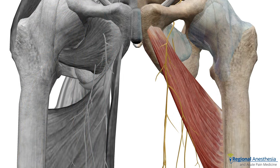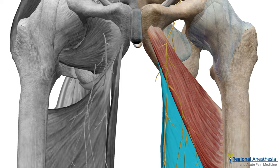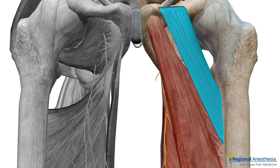The adductor brevis muscle acts as a splitter. The anterior branch of the obturator travels anteriorly to it, and the posterior branch goes posteriorly. Deep to brevis is the adductor magnus — the posterior branch is sandwiched in the plane between brevis and magnus. Superficial to brevis is the adductor longus, and the anterior branch is sandwiched between these two muscles. Pectineus muscle sits out laterally.